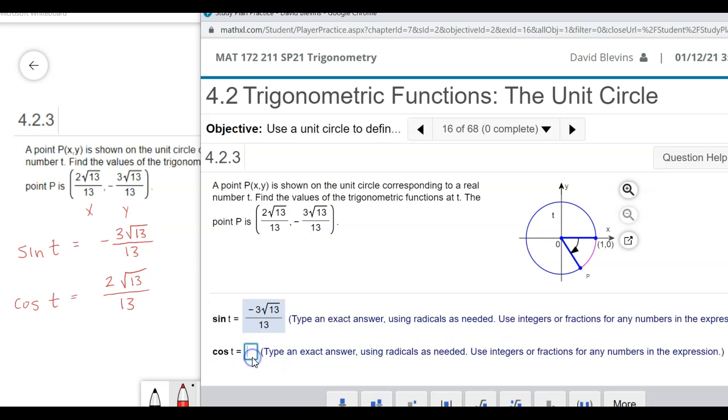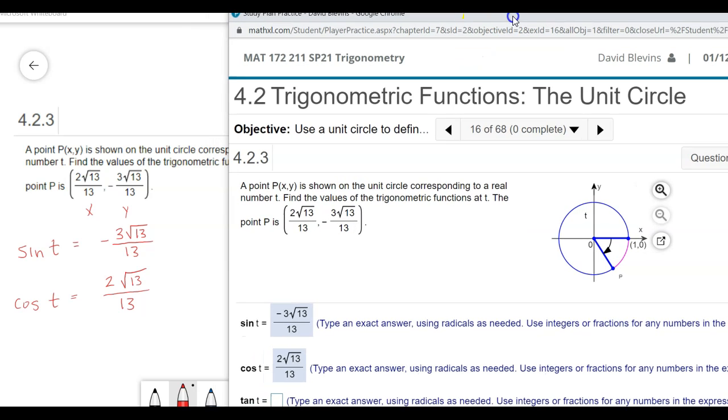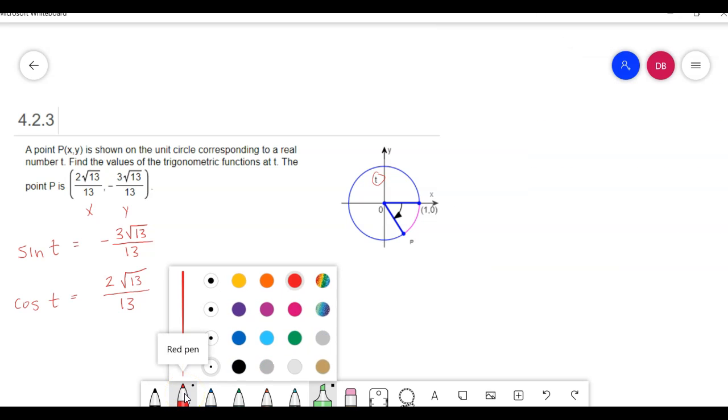Now what we have to do is remember that the rest have to do with sine and cosine, but we have to do a little bit of math. The next one they want is tangent. Tangent is sine divided by cosine. So that's going to be this one right here, negative 3 square root of 13 over 13, divided by this one. When I divide, I'm going to flip that and multiply.